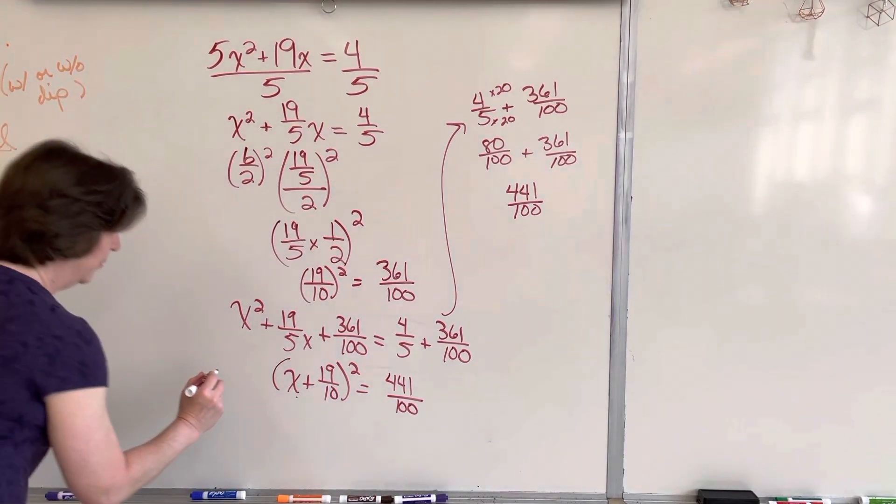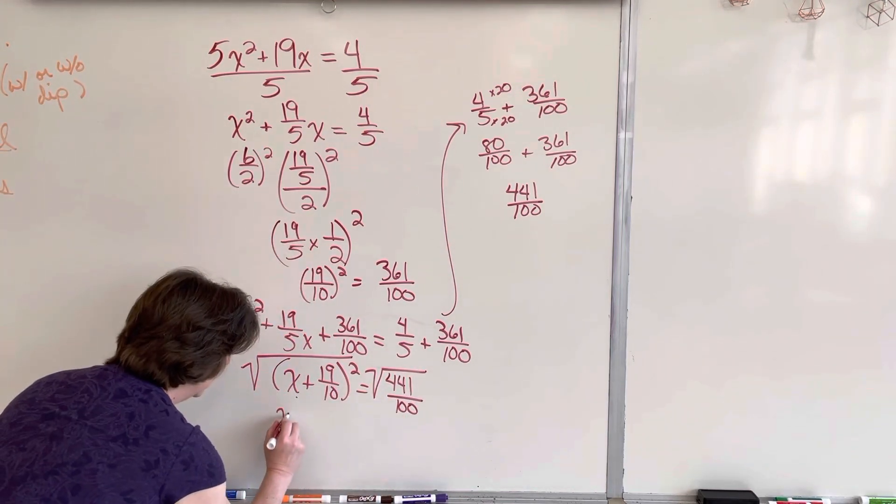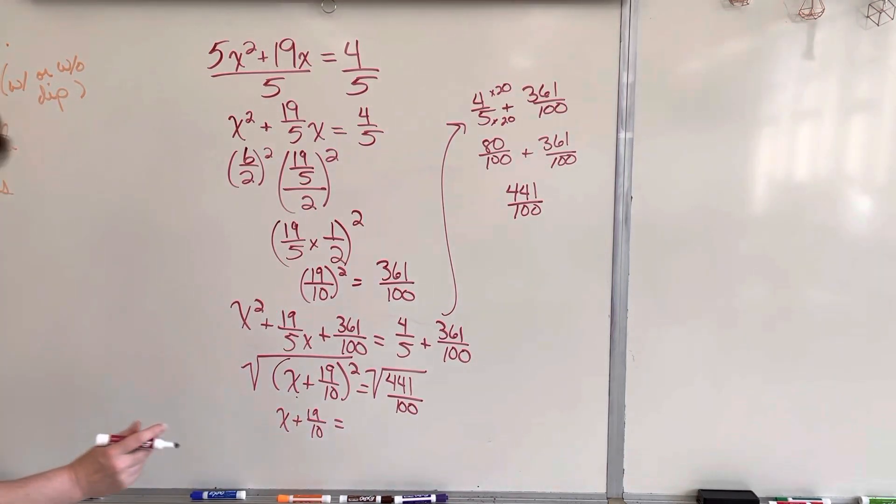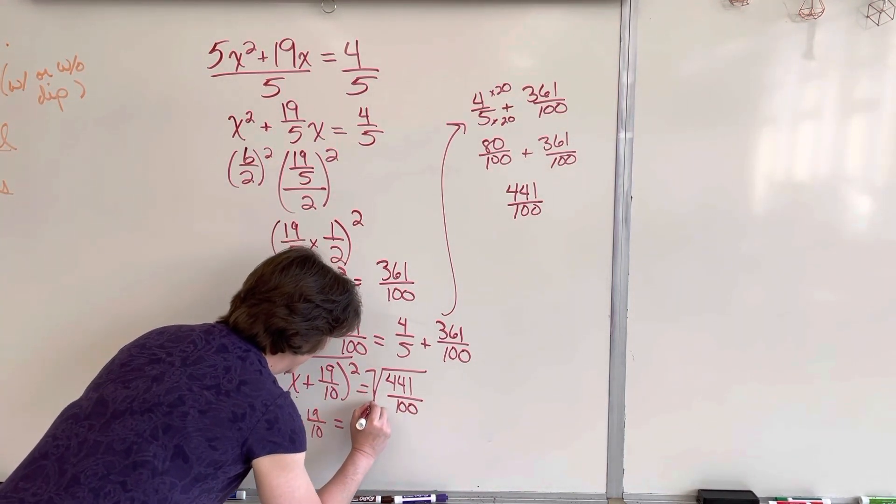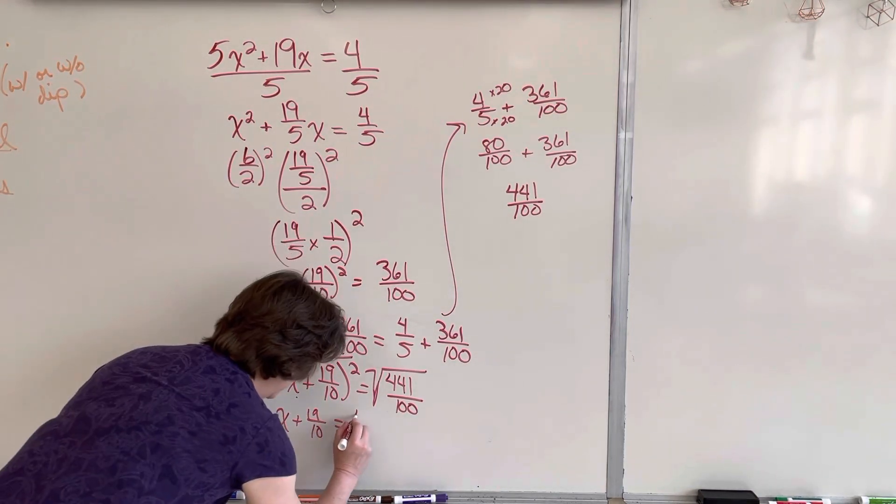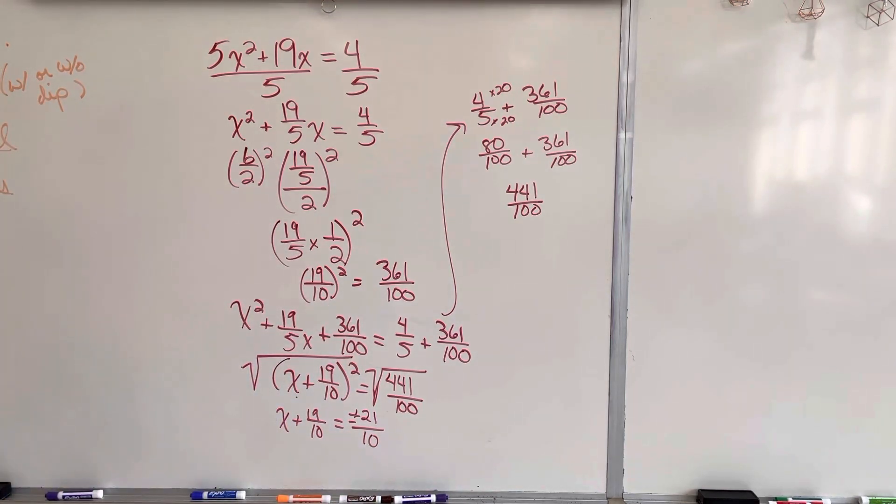I square root both sides. Square root over here, square root over here. x plus 19 over 10 equals. The square root covers everything. So 441 actually is a perfect square. Plus or minus 21 over square root of 100 is 10.